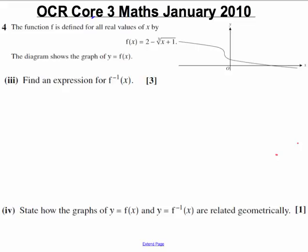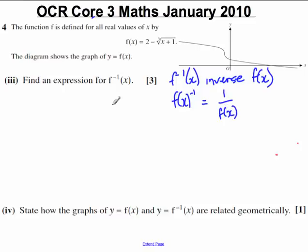Just before we launch into that, let's think what that means. f to the minus 1 of x is asking for the inverse function of f of x. Be careful not to confuse this with f of x to the minus 1, which is index notation, which means 1 over f of x. Here we're getting asked for the inverse function.